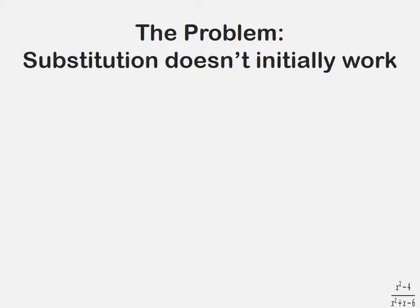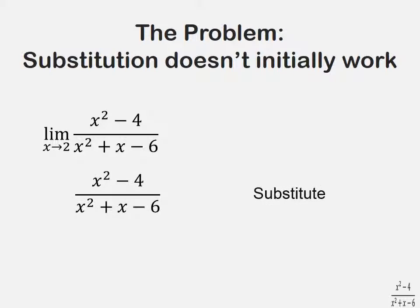In order to find the limit, we should always try substitution first. For our problem, we want to find the limit as x approaches 2 of x squared minus 4 over x squared plus x minus 6. We'll try substitution first.